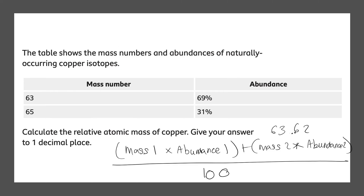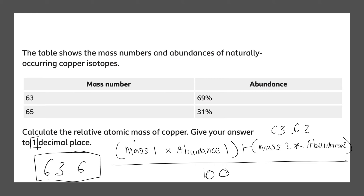However, the question asks for the answer to one decimal place, and this is where people normally lose their marks. So 63.62 rounded to one decimal place would be 63.6. This question is normally a four-marker — you have to show all your working out and have the correct answer to get your four marks.